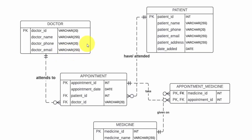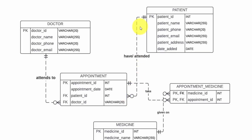We have the doctor table, which will store information about the doctors at the clinic, and the patient table, which will store information about the patients who visit the clinic. The appointment table represents the interaction between doctor and patient. A patient can have none or more appointments, and each appointment is attended by only one patient. A doctor attends to none or many appointments, and each appointment is associated with only one doctor.